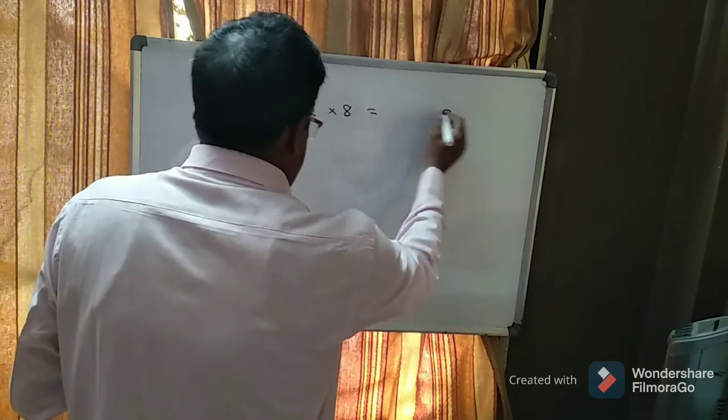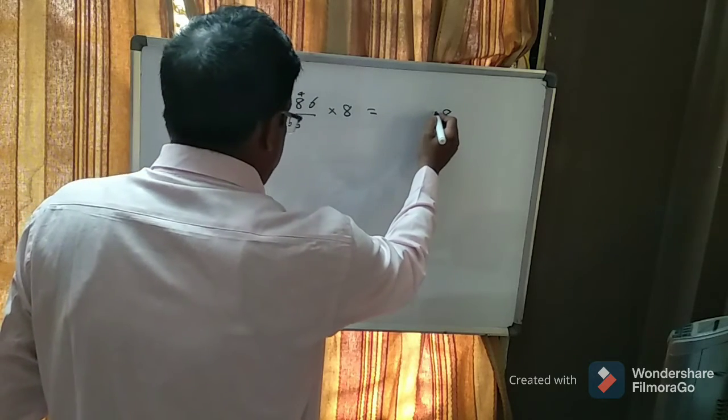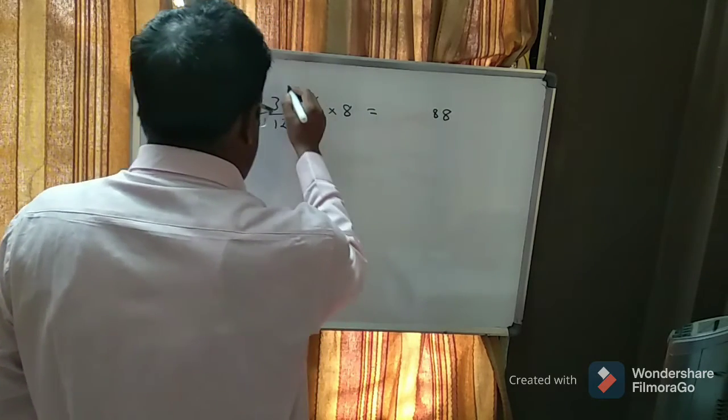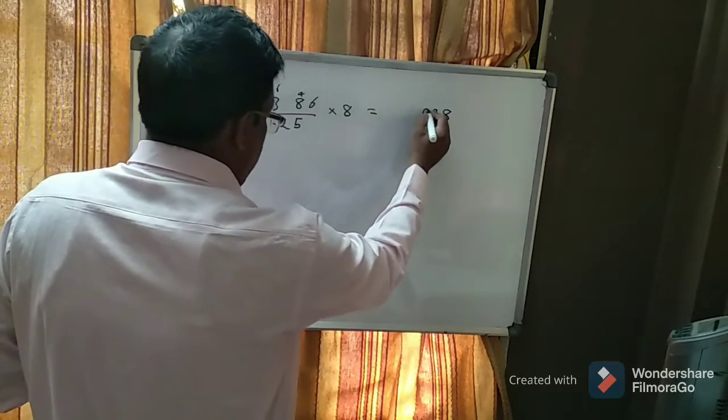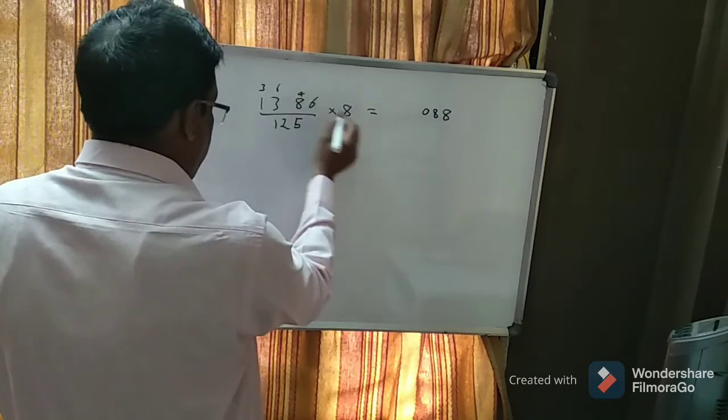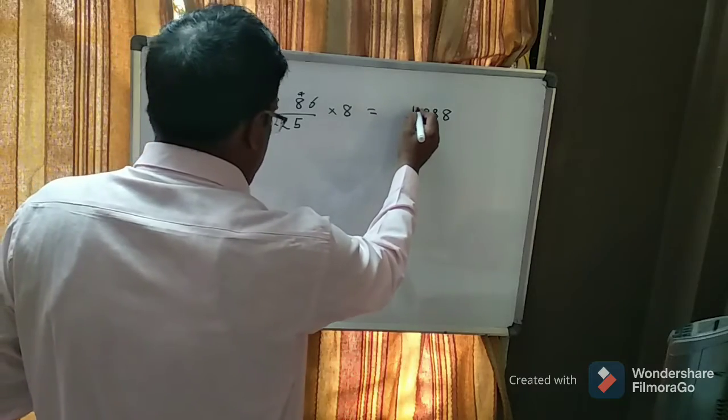Multiply the given number by 8. 6 times 8 is 48, carry 4. 8 times 8 is 64, plus 4 is 68, carry 6. 8 times 3 is 24, plus 6 is 30, carry 3. 8 times 1 is 8, plus 3 is 11.